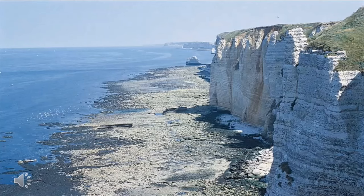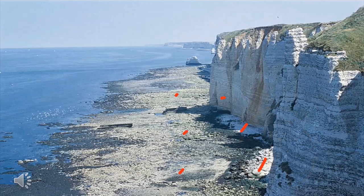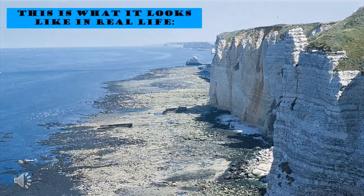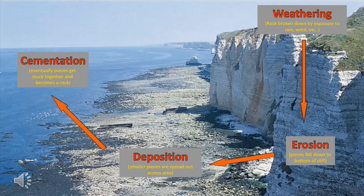In real life, the sequence looks like this: first, weathering — rock broken down by exposure to terrain, wind, and water — followed by erosion, where rock pieces fall to the bottom of a cliff. Then smaller pieces are spread out across the area through transportation or deposition. Eventually, these sediments get stuck together and become rock under the process of lithification. In short, the end product of exogenic processes is sedimentary rocks.